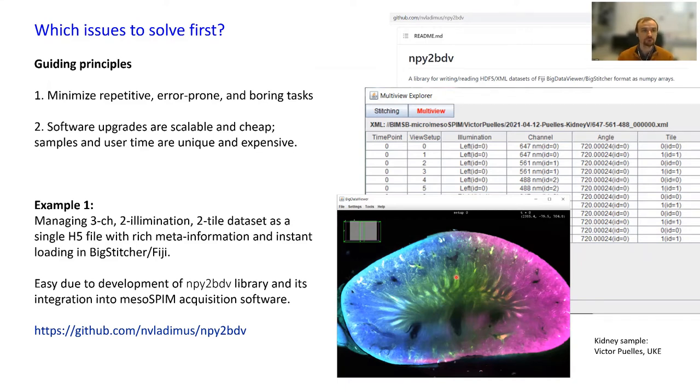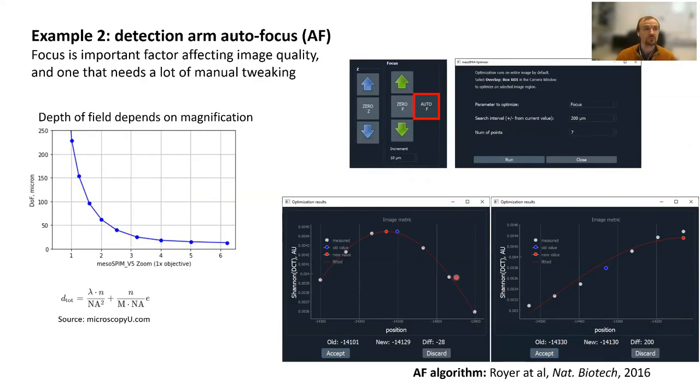Another recent development in the software is addition of autofocus, which I demonstrated in the hands-on session. Focus is probably one of the most important factors affecting image quality. In mesoSPIM particularly, this requires usually quite a lot of manual tweaking. Every time you change magnification, you need to adjust your focus. Depth of field depends very strongly on magnification. At zoom 1x, if you use a standard formula, the depth of field is almost 250 microns, but at zoom 6x it is only about 15 microns.